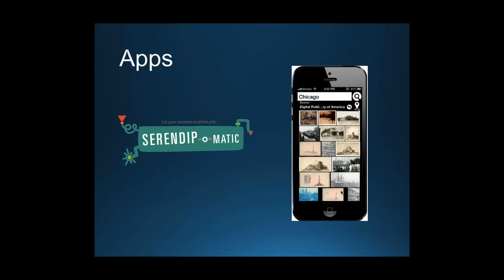People have used the DPLA's open data — descriptive information and thumbnails — to build new projects. Two examples: OpenPix, a mobile app that finds image content related to the user's current location; and Seren Diplomatic, which lets users paste a paragraph of text and find related items not just from the DPLA but also from Europeana (Europe's Digital Library), Trove (Australia's Digital Library), and Digital NZ (New Zealand's national project).